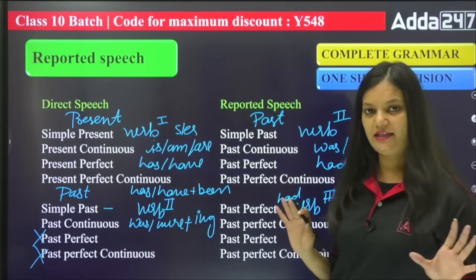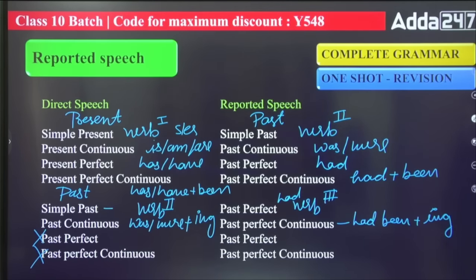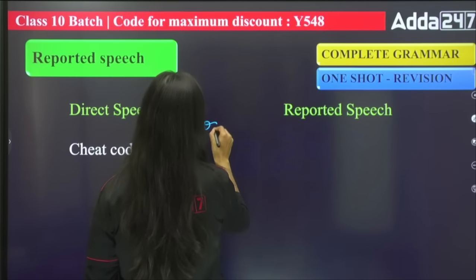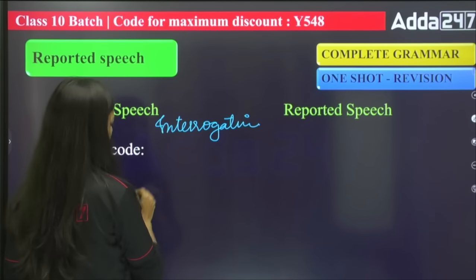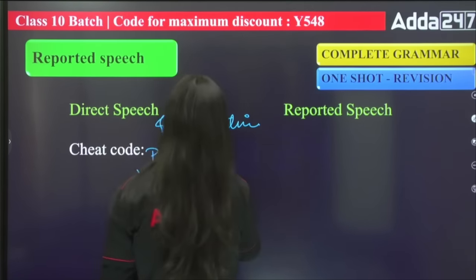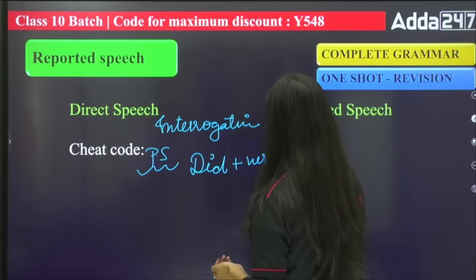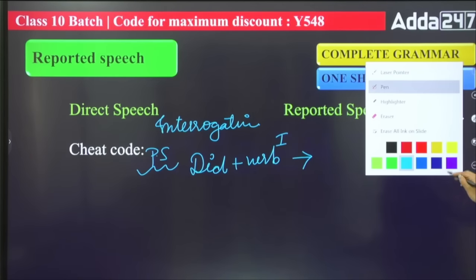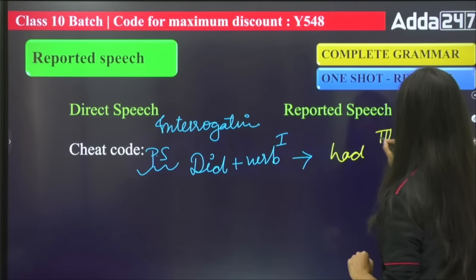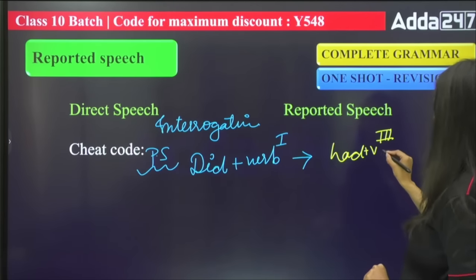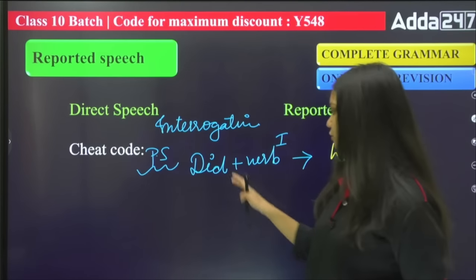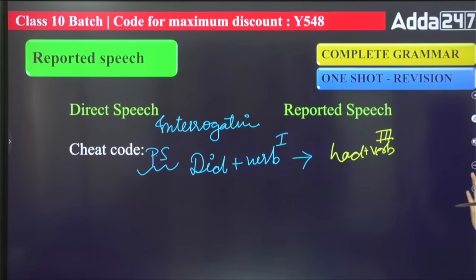Here is a cheat code that you need to know. For example, if the sentence is interrogative — what do kids do here? When your sentence is interrogative and the tense is present simple, and the verb is in the first form, here is the cheat code: you change the verb to the past form. If the sentence starts with 'do you,' it is present simple tense. The cheat code is to take the first form and convert it to the past simple form — which is already in the back of the tense table. That is clear.